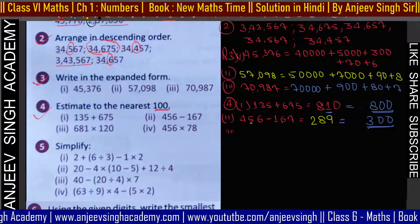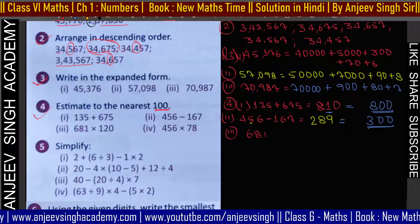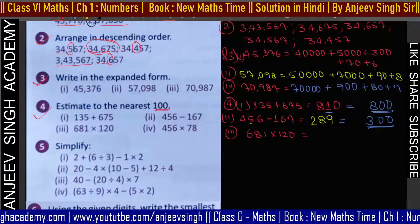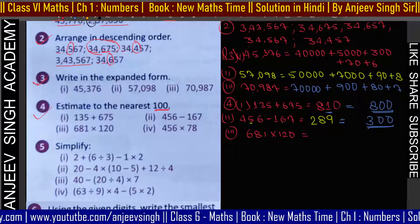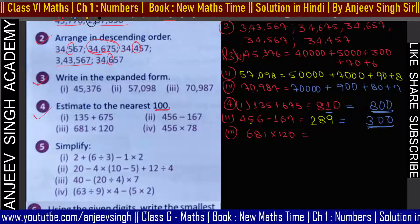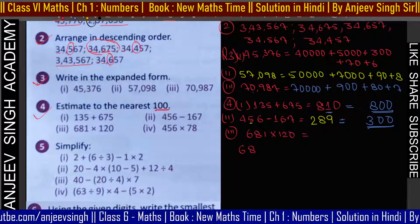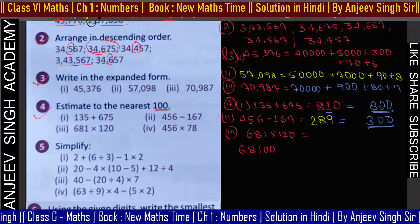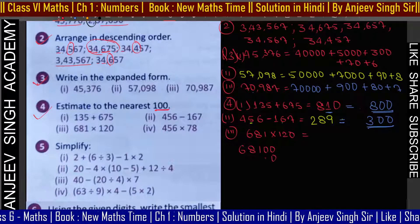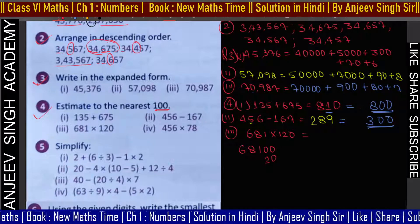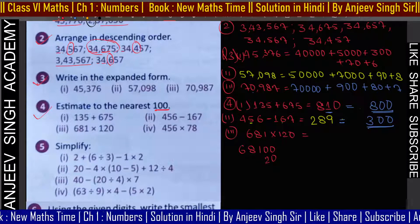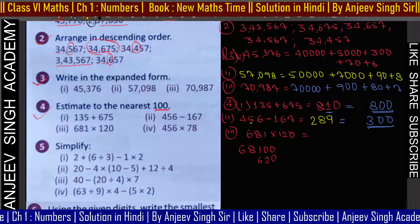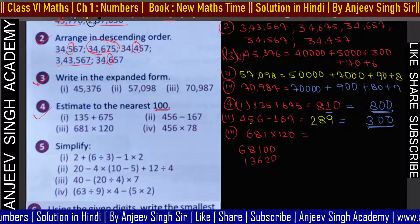Question number 3: multiply करना है — 681 multiply 120। Shortest तरीका अपनाता हूँ। Simplest form में: 68100 पहला आ जाएगा। उसके बाद एक 0 डालो फिर 2 — 2×8 = 16 carry 1, 6×2 = 12 plus 1 = 13।